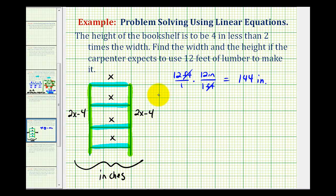Now we have all the information we need to write an equation to determine the width and the height of this bookshelf. If we add all these lengths up, it must equal 144 inches.